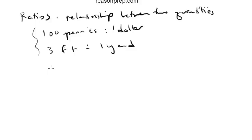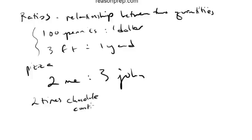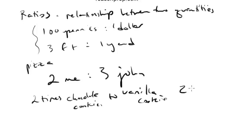For instance, if you have a pizza pie and you say something like, for every two slices I eat, John eats three, the ratio between my slices to his slices would be two to three. Or something like, there are two times the number of chocolate cookies to vanilla cookies. So for every two chocolate cookies you got, you got one vanilla cookie. That's a two to one ratio.